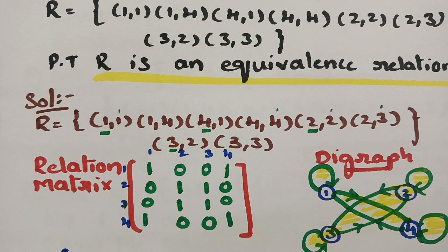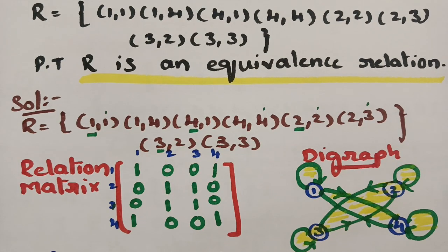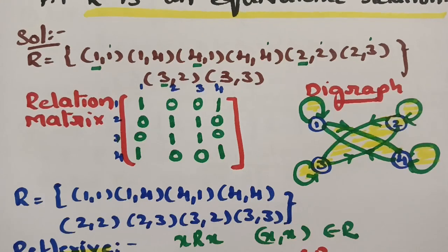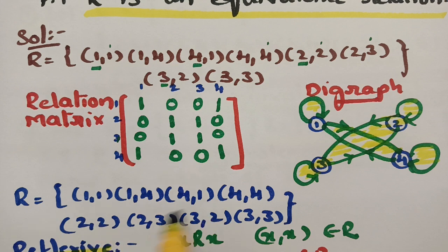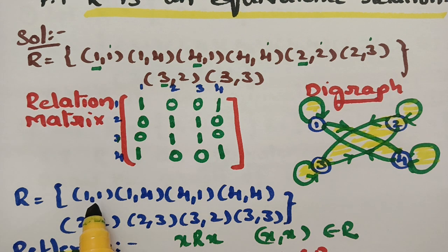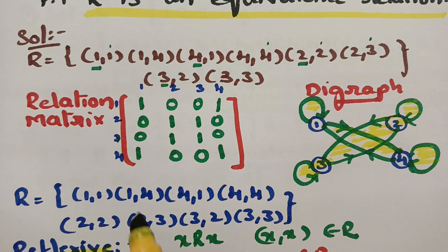As R is reflexive, symmetric, and transitive, hence we say that R is an equivalence relation. The relation is expressed in two notations: the relation matrix and the digraph.